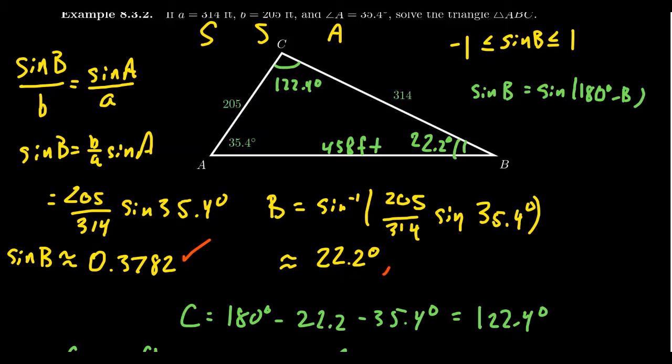The obtuse angle would be 180 degrees minus 22.2 degrees. That's also a possibility that we have to consider. So we consider the situation where B is acute, which forces C to be obtuse. But what if B is the obtuse angle? We take 180 degrees minus 22.2 degrees and end up with 157.8 degrees.